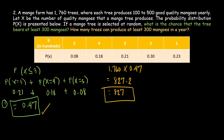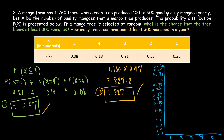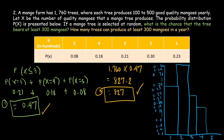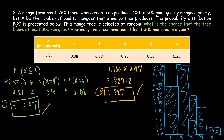So we have our first answer of 0.47 and our second answer of 827 mango trees in a year. We then create a histogram from our table. I hope you learned from this video, and if you have questions, don't forget to comment down below.